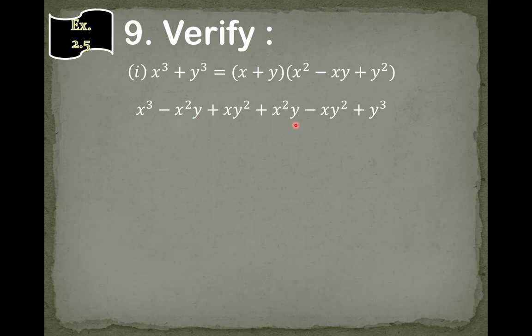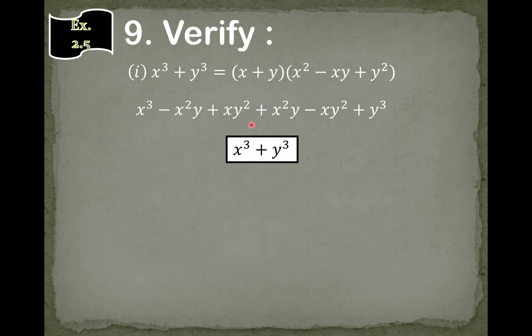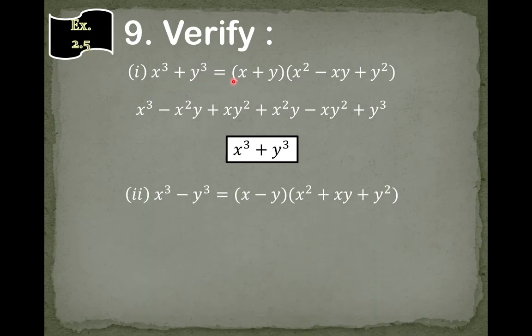Now here the minus x square y and the plus x square y will cancel out. And the plus x y square and the minus x y square will also cancel out. So our answer will be x cube plus y cube, and we have verified this.